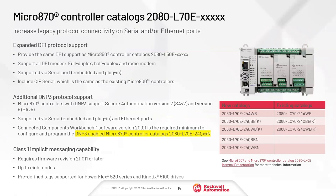The 870E follows the same story. The previous 2080-LC70 models will become discontinued in the near future and will be replaced by the L70E — direct replacements with enhanced communication capabilities. Same as the 850, they gain DF1 protocol support, and the key difference is DNP3 support. Importantly, if you need DNP3 you must purchase the N model — there's an N at the end of the catalog number indicating DNP3 capability.